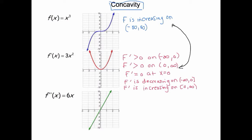The derivative of the derivative — its derivative is 6x, and that's f prime prime, f double prime. F double prime is negative on the interval negative infinity to zero, and f double prime is positive on the interval zero to infinity. And f double prime equals zero at x equals zero.